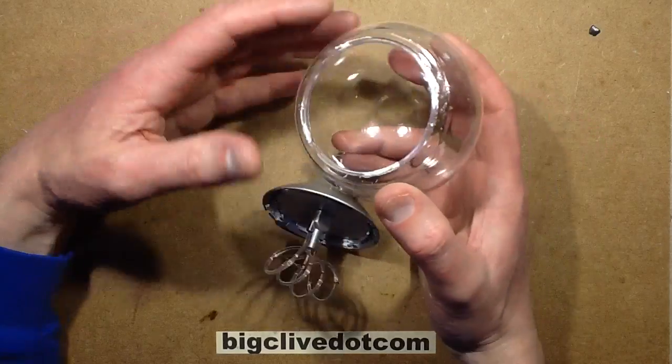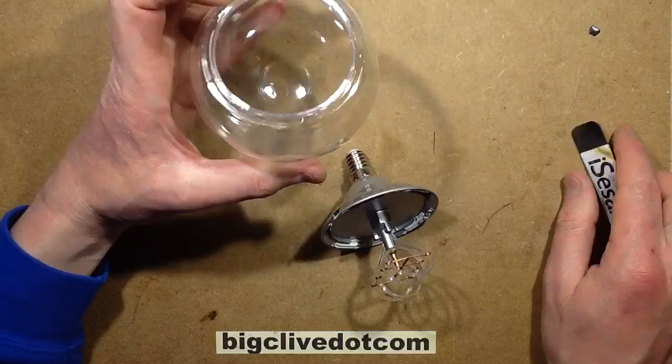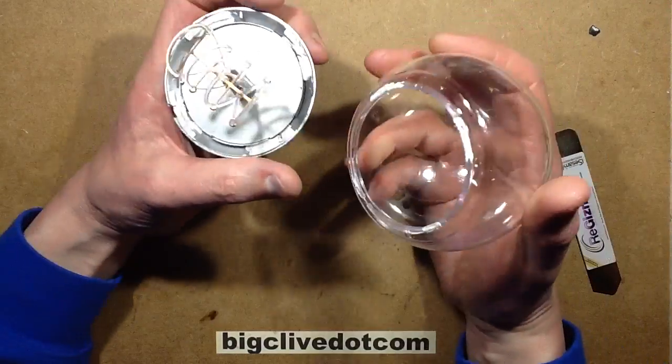Okay, the dome is off. I have to say that you can use a spudger to get right down the sides and break the glue, but it still doesn't come out easily. You have to use a modest amount of force to get this out.